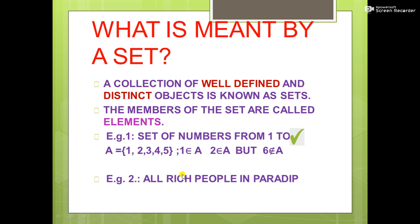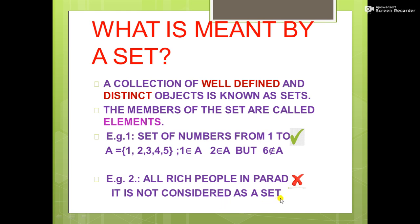Next example: all rich pupils in the class — can we consider it as a set? No. The reason is the word 'rich pupil' is not well-defined and distinct. A rich man can be poor for you, and a poor man can be rich for me. So individual views differ. That means it is not well-defined, so it is not considered as a set.